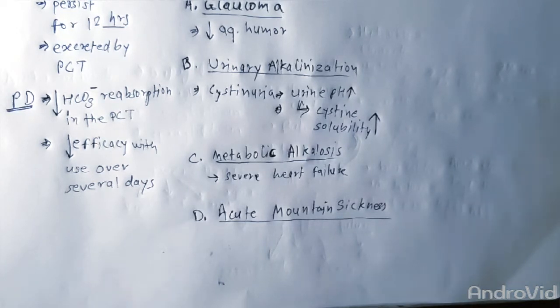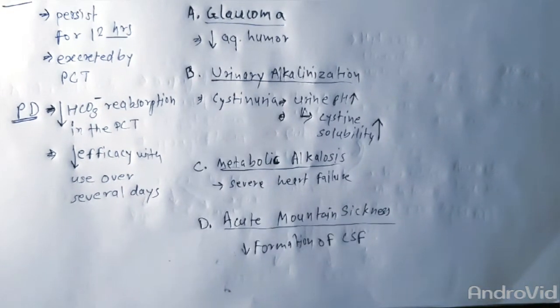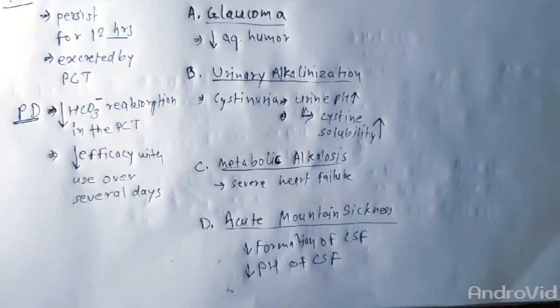Acetazolamide is used in this case to decrease the formation of CSF and to decrease the pH of CSF in the brain.